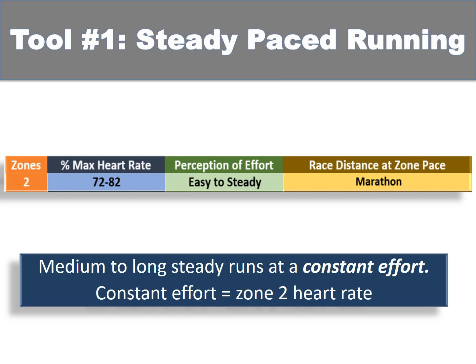Tool number one is steady pace running. Our steady pace running is zone two — 72 to 82 percent max heart rate. In our steady pace runs, all we're doing is going out and running for a given amount of time in a zone two heart rate. There are no intervals, no trying to run harder — we just continue to run in that zone. These would be medium to long steady runs at a constant effort, meaning staying at zone two heart rate.